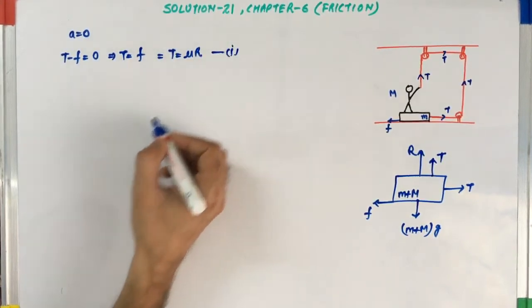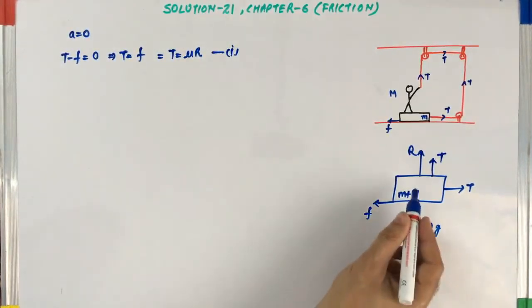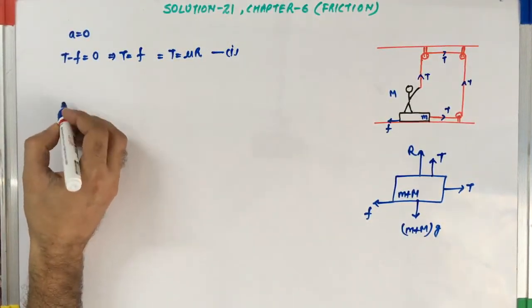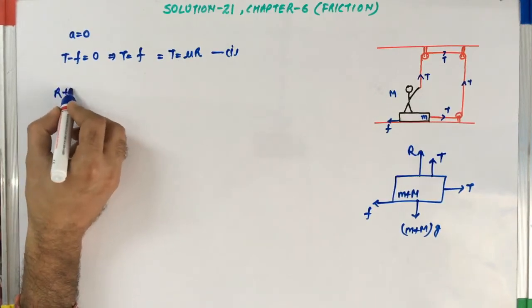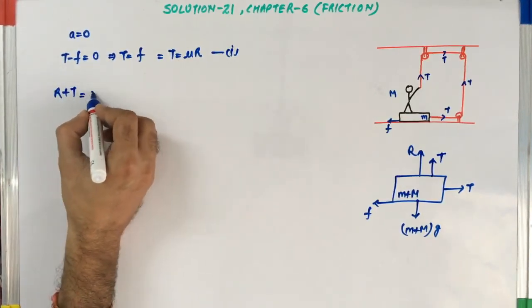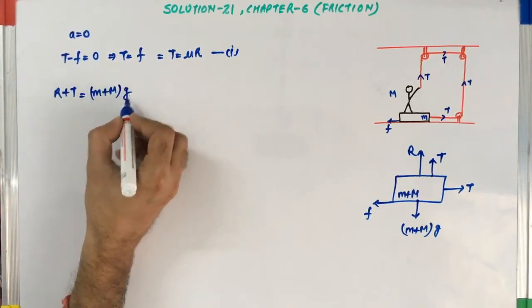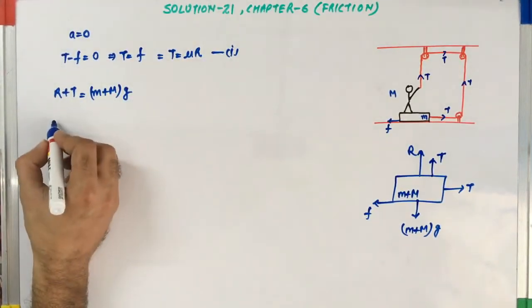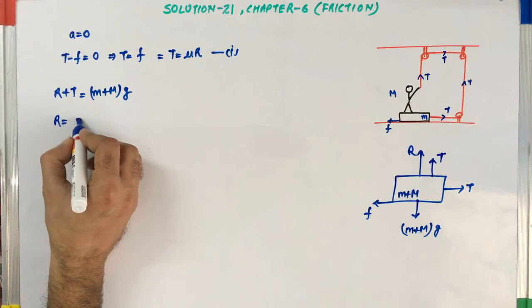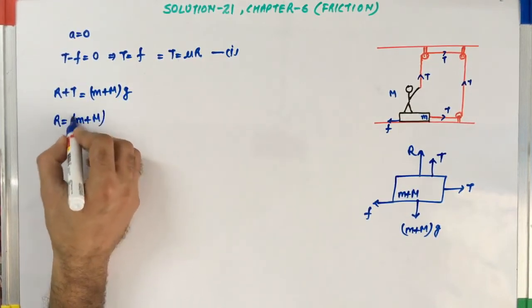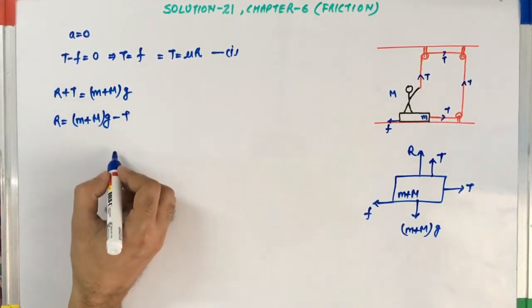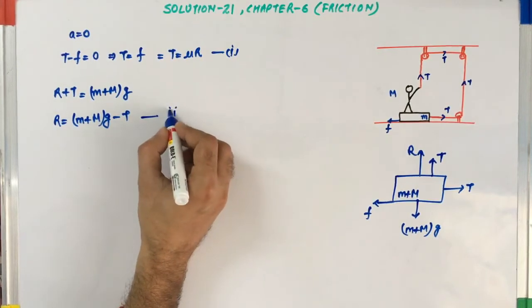Now for the vertical equilibrium, there are two forces acting in the upward direction. So R plus T must be equal to M plus M into G. From here we will get the value of R as M plus M into G minus T. Let's say this is equation 2.